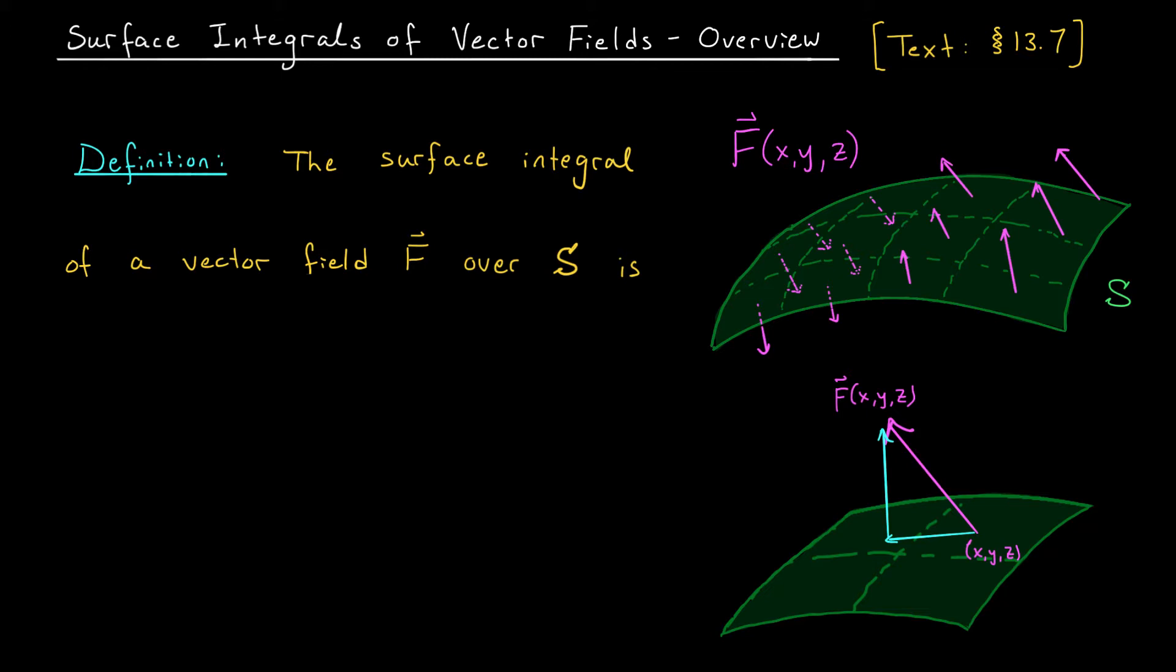It's this normal component that we're interested in. This is the force that pushes our fluid through the surface. As we've seen in the past, we can obtain this component of velocity using a dot product. If this vector here is a unit normal vector to our surface, so it has norm one and it's perpendicular to S at this point, then this component of our force is really F dot N. It's F dot N at the point X, Y, Z.